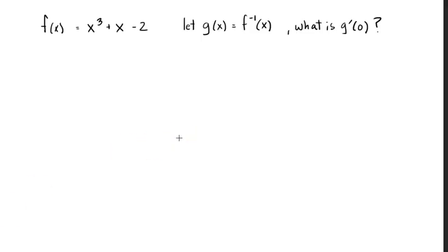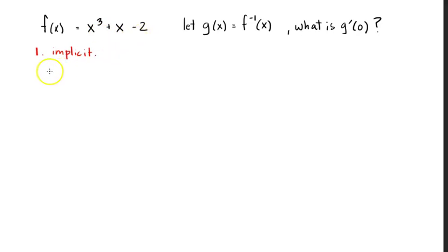I'm going to look at this in two different ways. The first way is called using the implicit function to solve this. So in this case, I'm just going to look at my function. Rather than saying y equals x cubed plus x minus 2, I'm going to say now my function is x equals y cubed plus y minus 2, and I'm not going to do anything else with it.